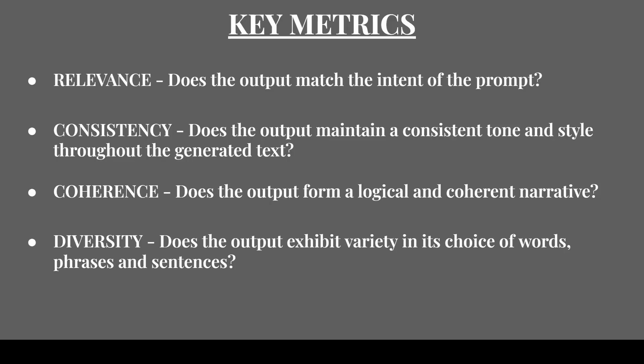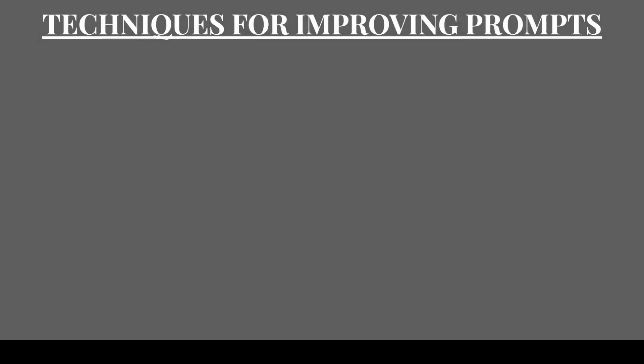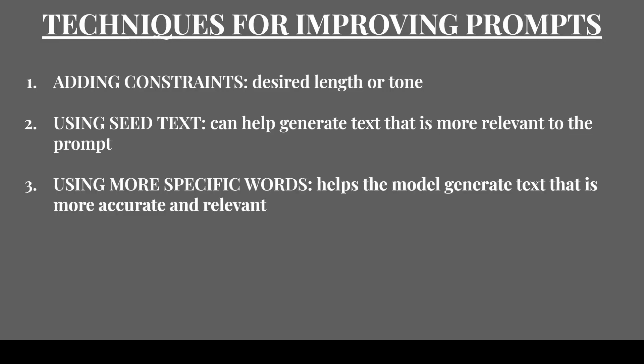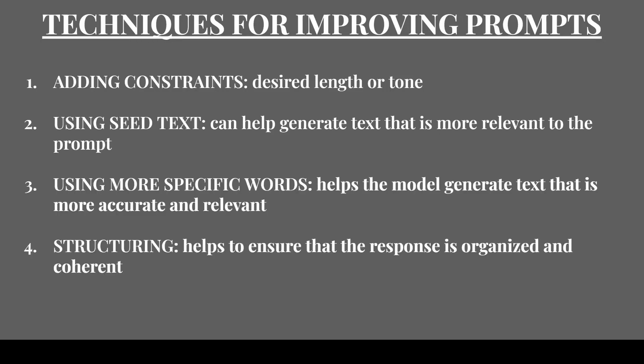Now there are several techniques you can use to improve the quality of your prompts. You can add specific constraints, such as a desired length or tone, which can help steer the model in a desired direction. You can also provide the model with seed text, such as a paragraph or sentence, as this can help the model generate text that is more relevant to the prompt. You can use more specific words in the prompt to help the model generate text that is more accurate and relevant, including terms related to the topic, the target audience, or the desired style.